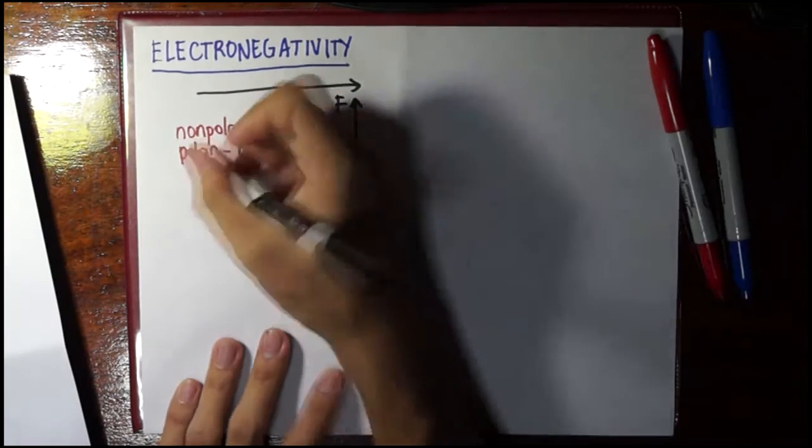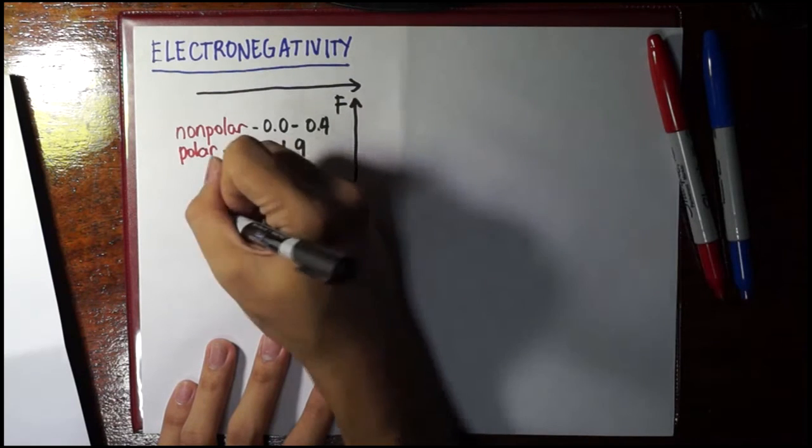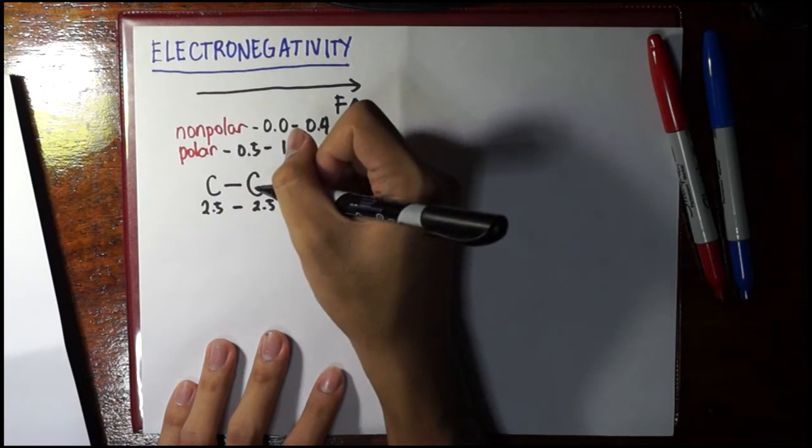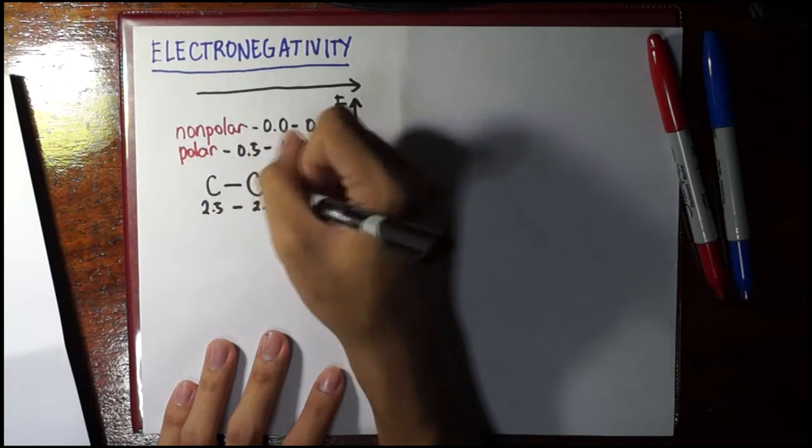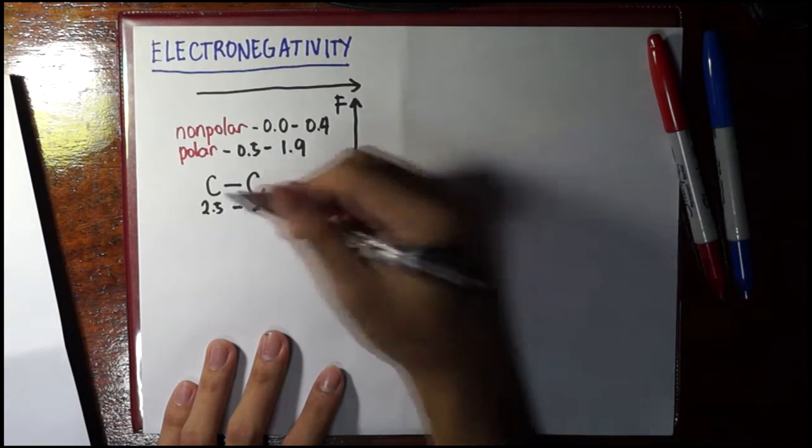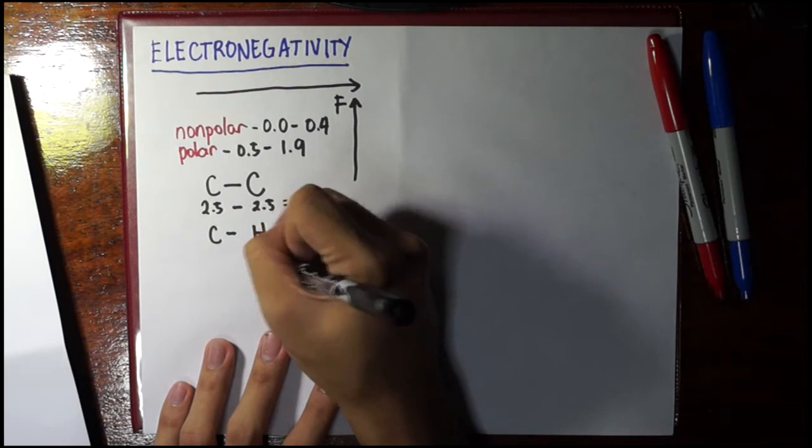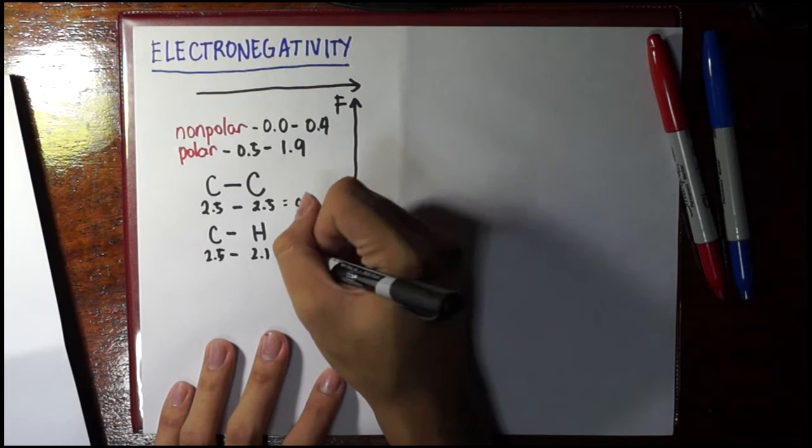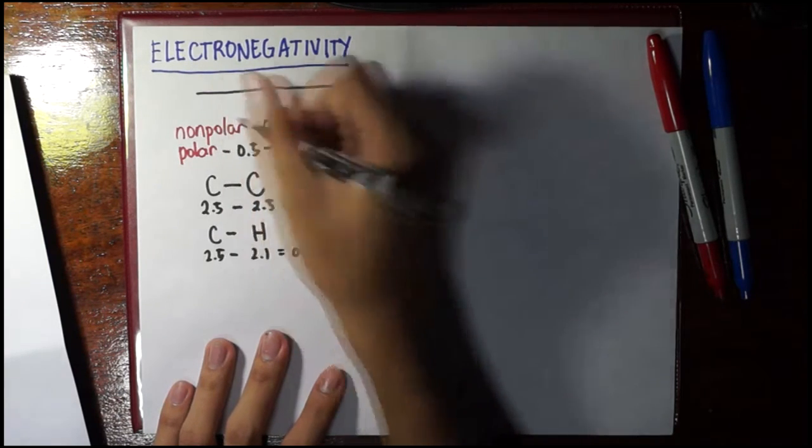Let's have an example now. I have a carbon-to-carbon bond, and as I said, to get the electronegativity difference, you get the absolute value of their values of the atoms between the bond. So of course, the answer here is 0, making this bond non-polar. Let's have another example. Here, carbon is 2.5, hydrogen is 2.1. So the absolute value of this difference is 0.4, and it will also still be non-polar.